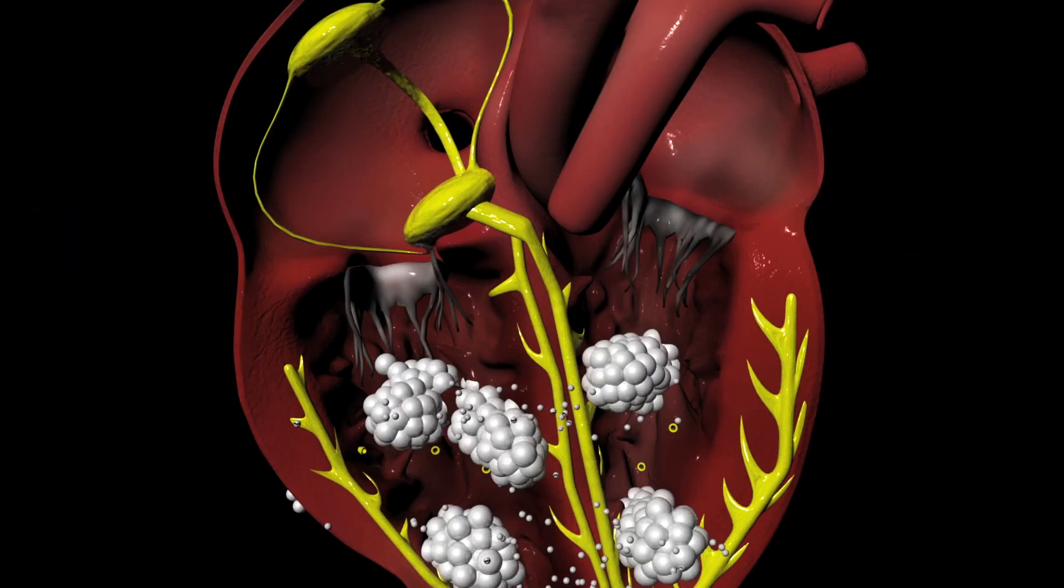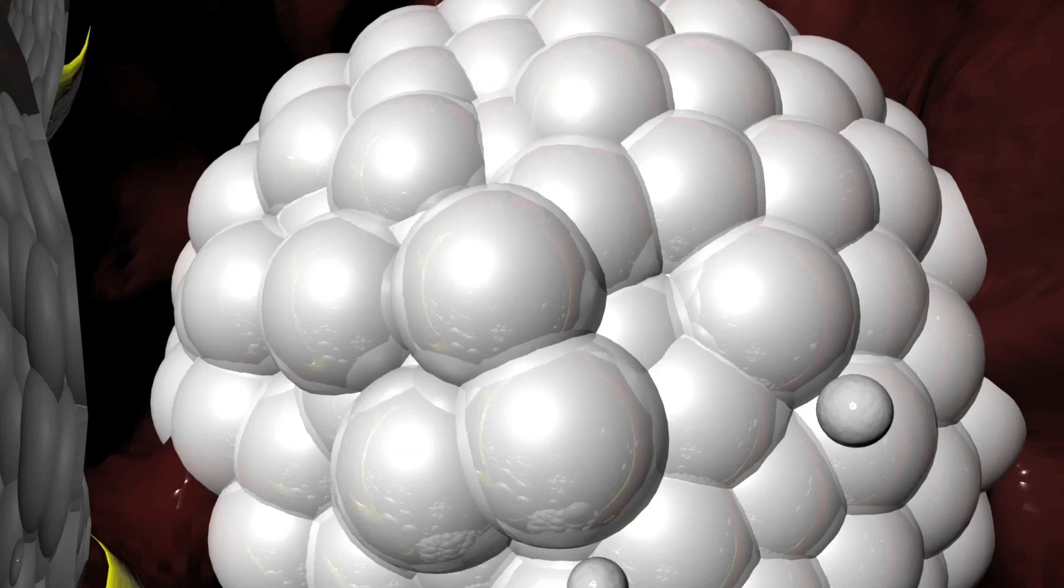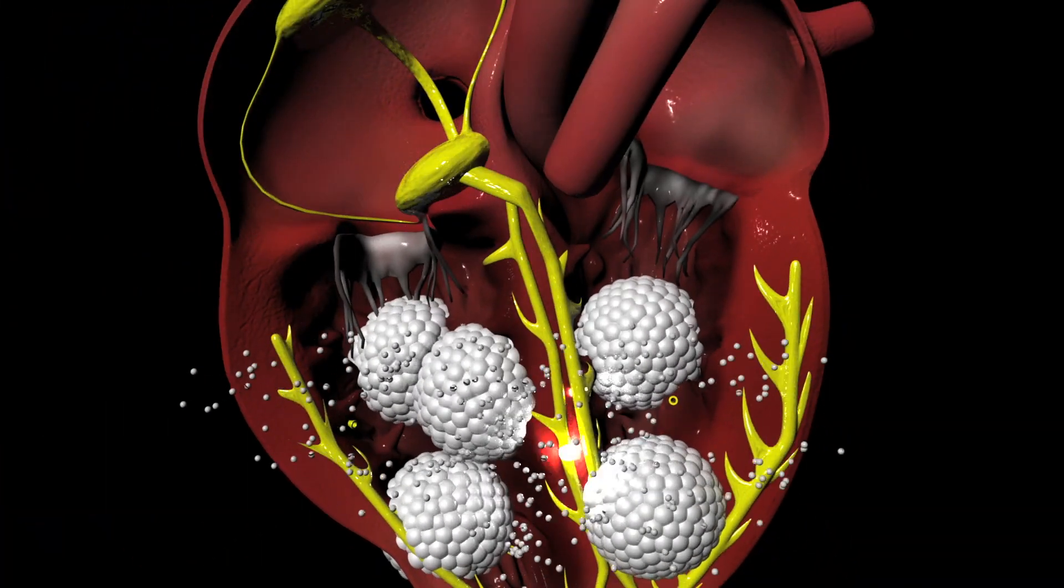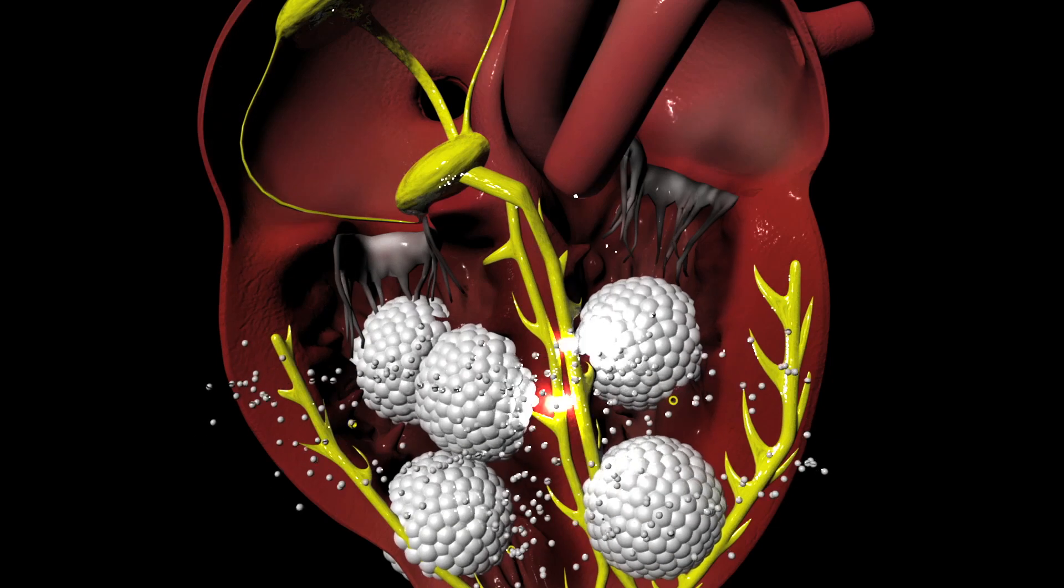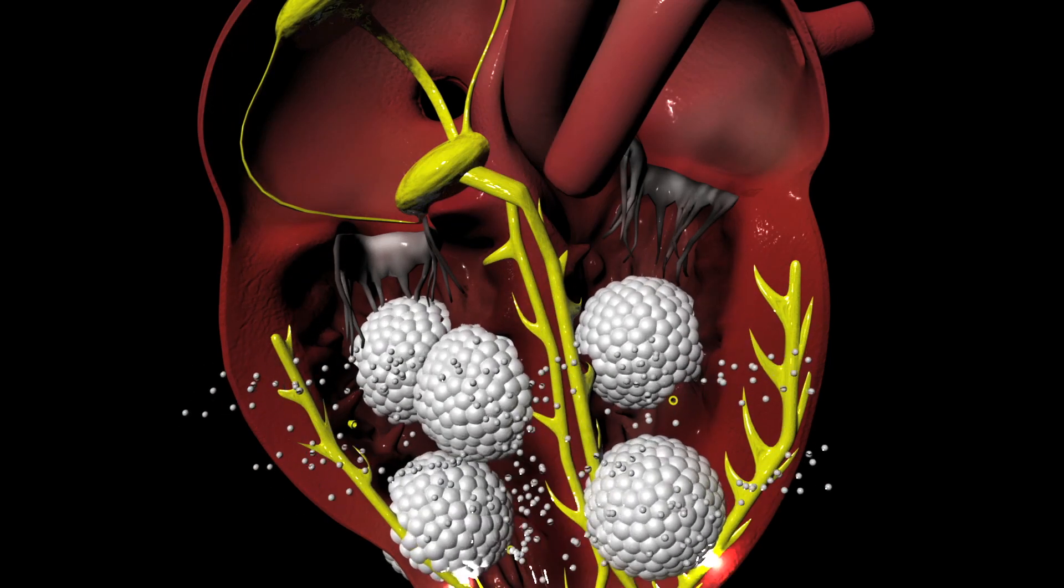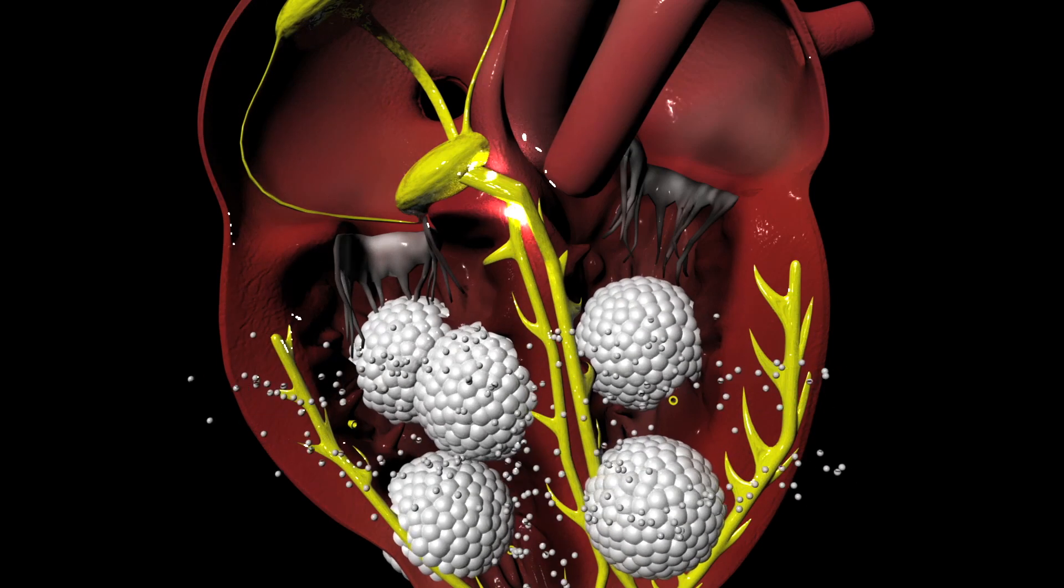The drug binds to the calcium channels and causes them to close. With decreased calcium entering the heart, conduction slows down to a regular pace. The slower heart rate reduces blood pressure.